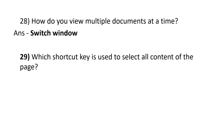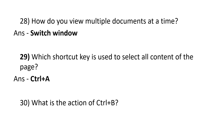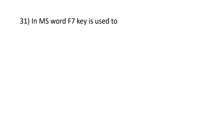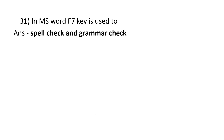How do you view multiple documents at a time? Switch window. Which shortcut key is used to select all content of the page? Ctrl plus A. What is the action of Ctrl plus B? Bold highlighted selection. In MS Word, F7 key is used for spell check and grammar check.